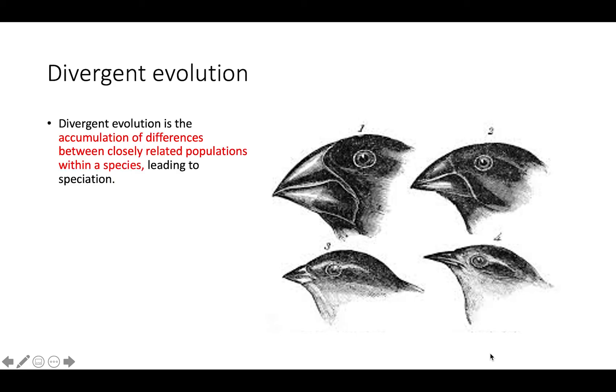An example of this would be Darwin's finches. Originally, all of these finches belonged to the same species, but over time, differences accumulated in their beaks based on the kinds of seeds they were able to access.